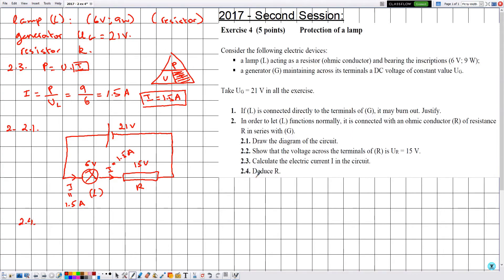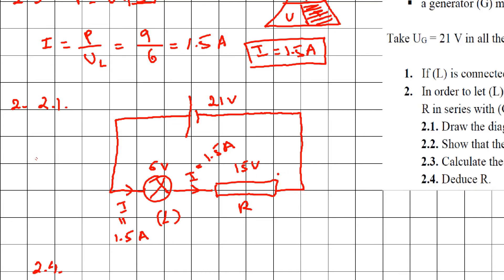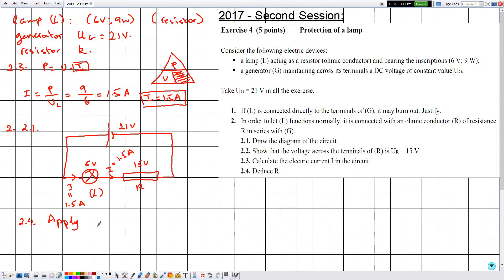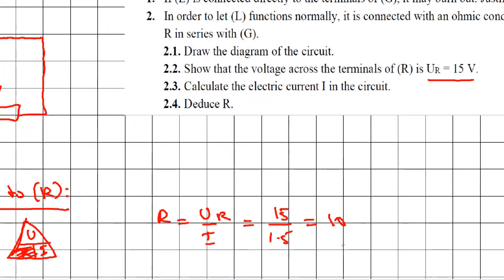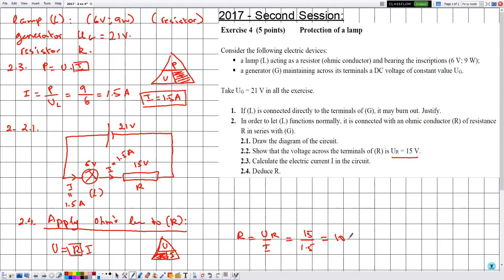For question 2.4, we deduce the value of r. Since we know i from 2.3 and the voltage across R from 2.2, we apply Ohm's law to R: U = R × I. Using the formula triangle, R = UR ÷ i = 15 ÷ 1.5 = 10 ohms. So R = 10 Ω, which is the resistance needed for L to function normally. That completes this exercise — hope it was beneficial, see you soon.